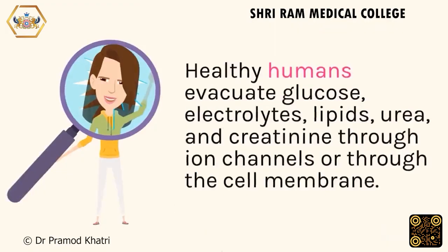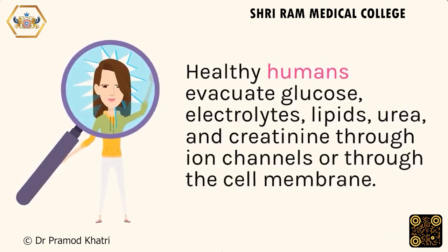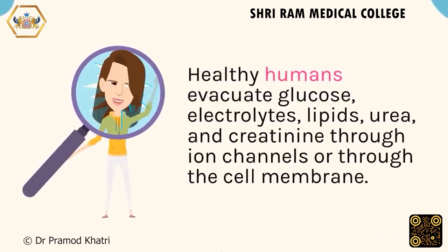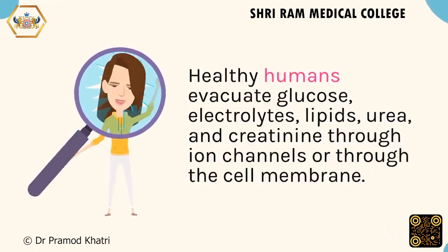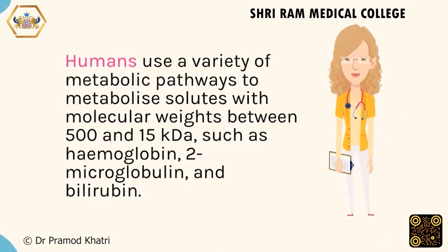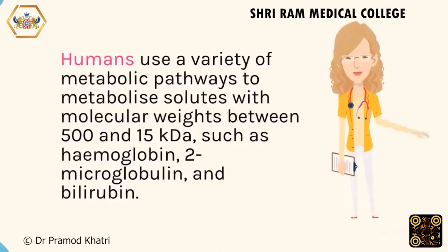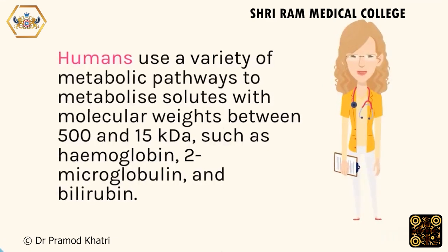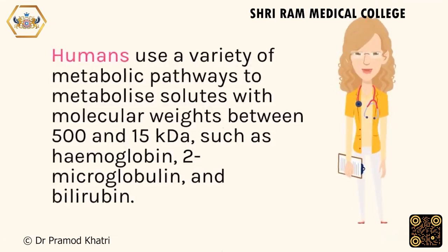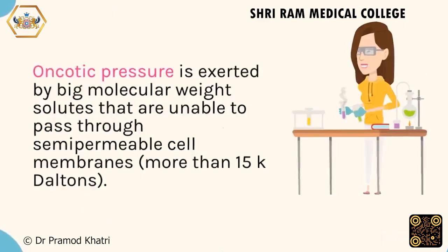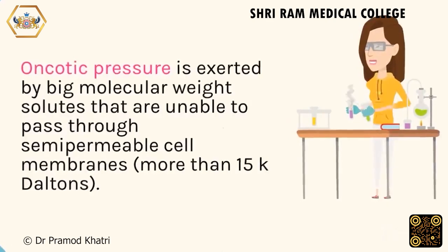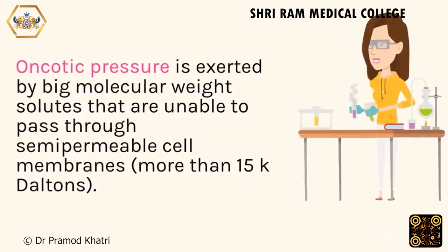Healthy humans evacuate glucose, electrolytes, lipids, urea, and creatinine through ion channels or through the cell membrane. Humans use a variety of metabolic pathways to metabolize solutes with molecular weights between 500 and 15 kDa, such as hemoglobin, beta-2 microglobulin, and bilirubin. Oncotic pressure is exerted by high molecular weight solutes that are unable to pass through semi-permeable cell membranes — those above 15 kDa.